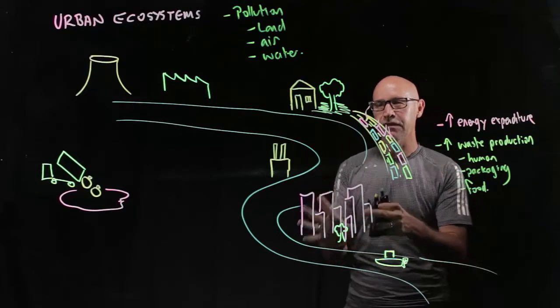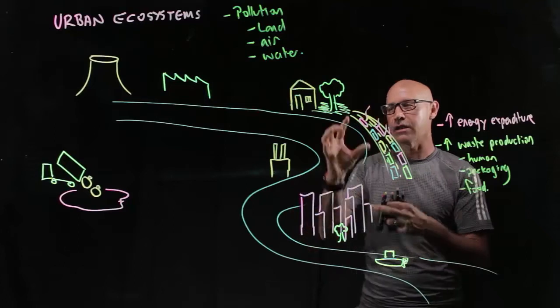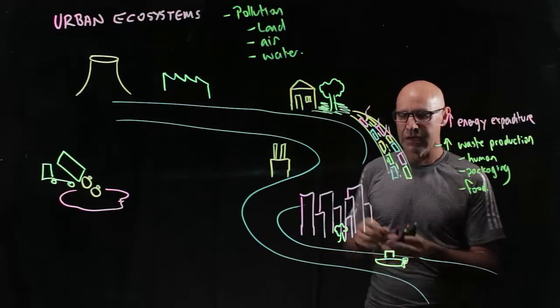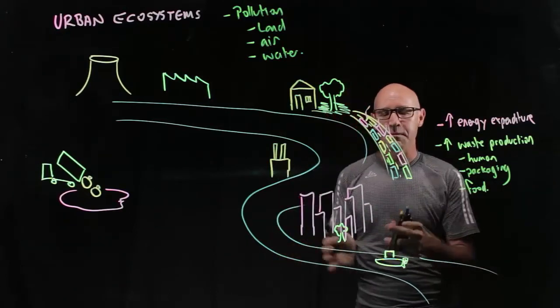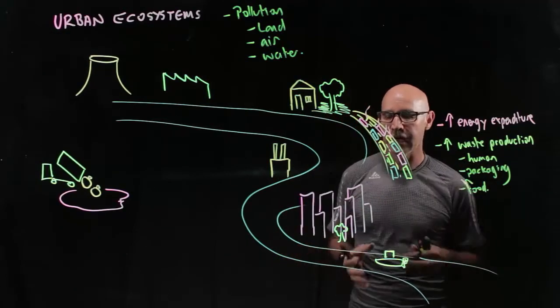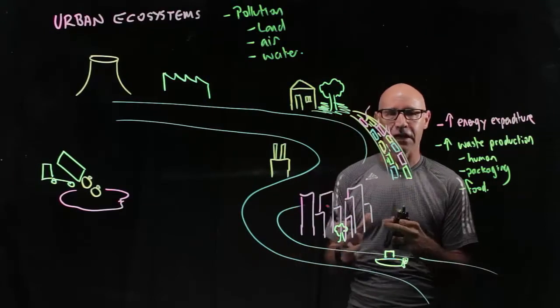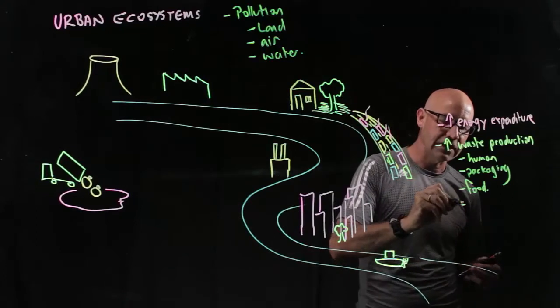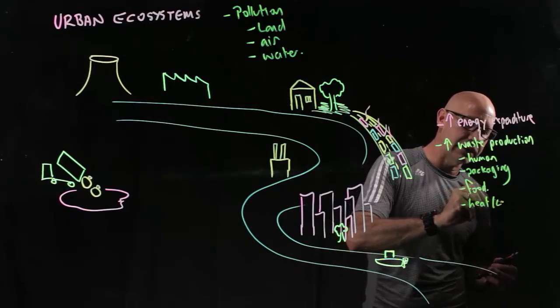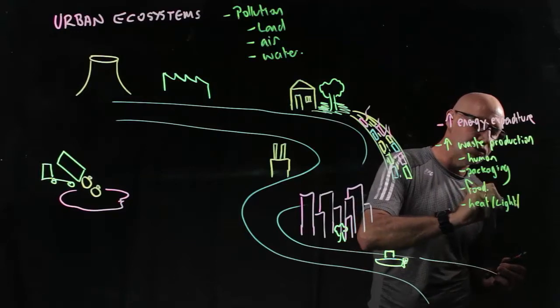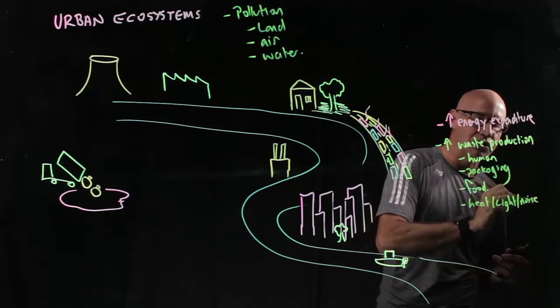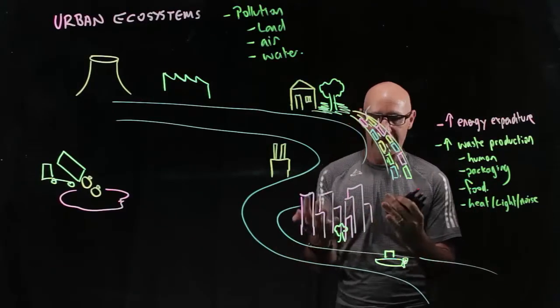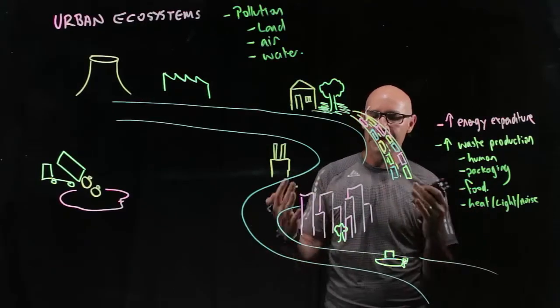So let's start in the city and we're going to look at a number of different processes and how they affect land, air, and water pollution. So in the city, we've got a whole heap of people that live 24 hours a day in the city. So we're using a massive amount of energy. And one of the things that we produce in terms of waste is heat and light, and of course, noise pollution or noise waste.